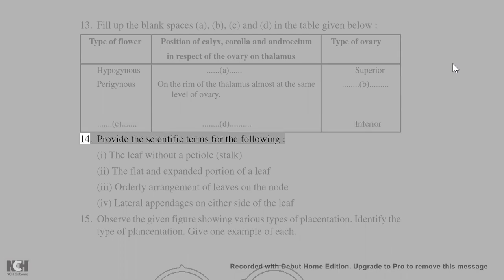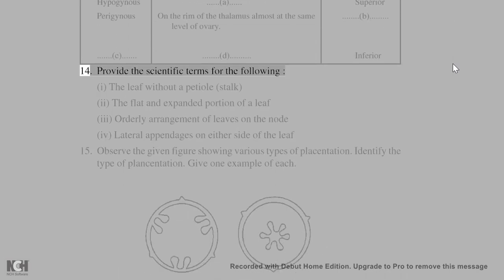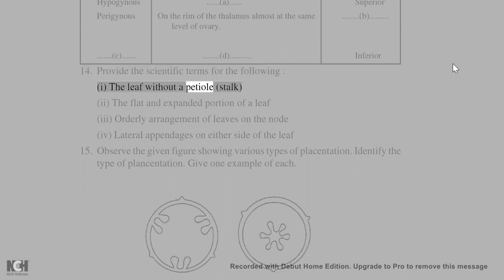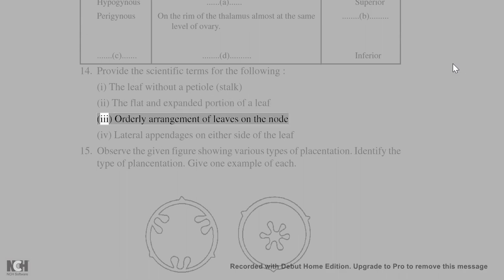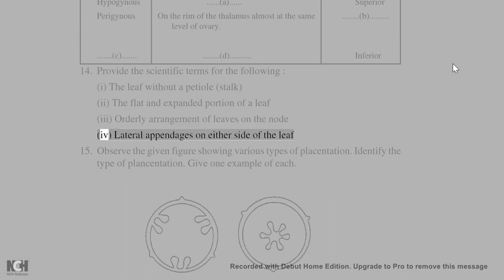14. Provide scientific terms for the following: (1) The leaf without a petiole/stalk. (2) The flat and expanded portion of a leaf. (3) Orderly arrangement of leaves on the node. (4) Lateral appendages on either side of the leaf.